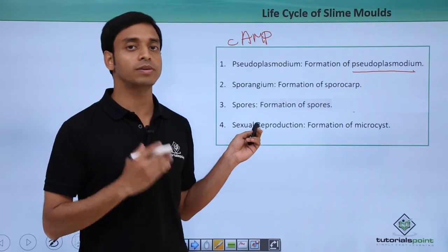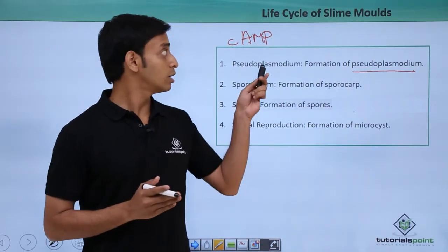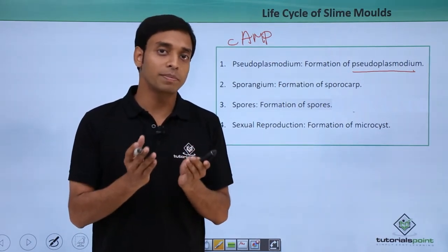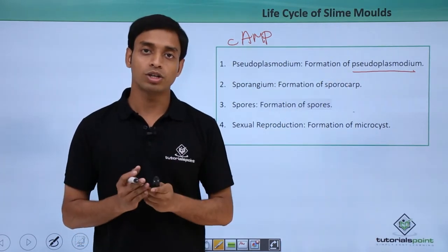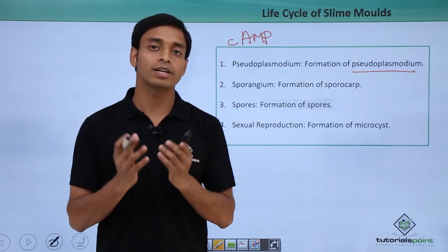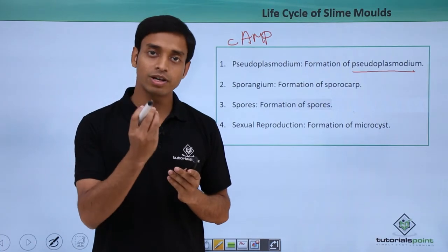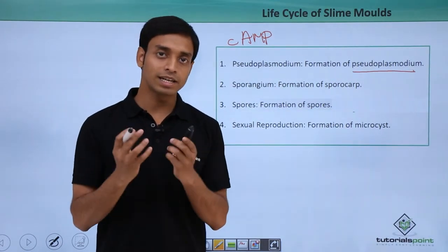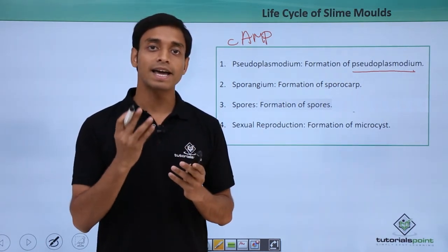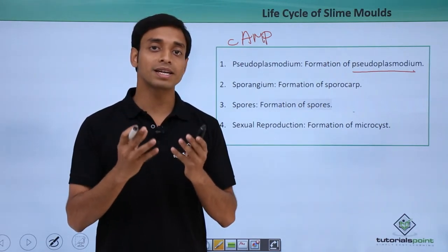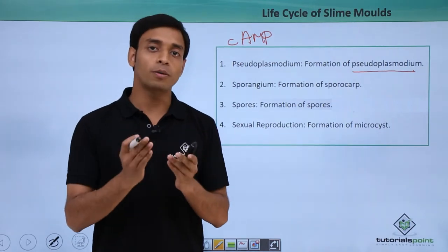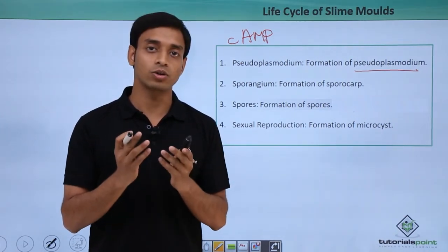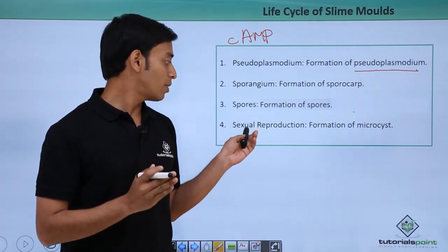The fourth type is basically a form of sexual reproduction followed by cellular slime molds, involving the formation of a structure known as microcyst. In the pseudoplasmodium clumps, the central-most cell starts engulfing the surrounding cells, increasing in volume and mass to become larger. This enlarged cell secretes a cellulosic layer around itself, resulting in the formation of a zygote. These structures are termed microcysts and represent sexual reproduction.